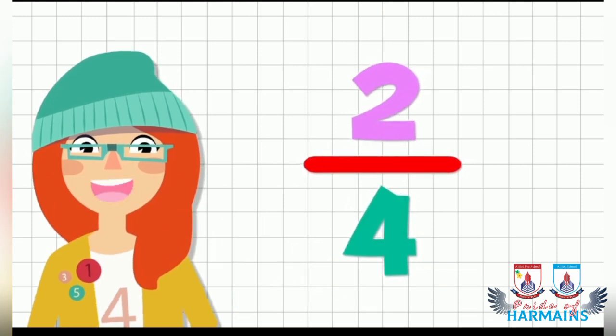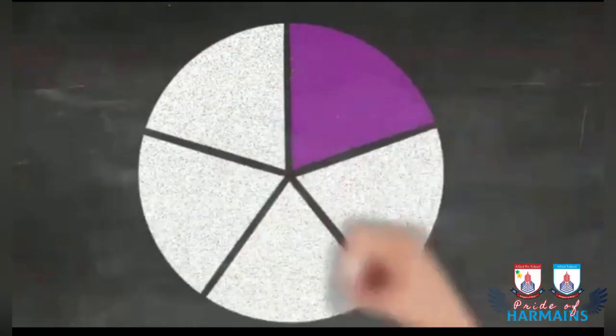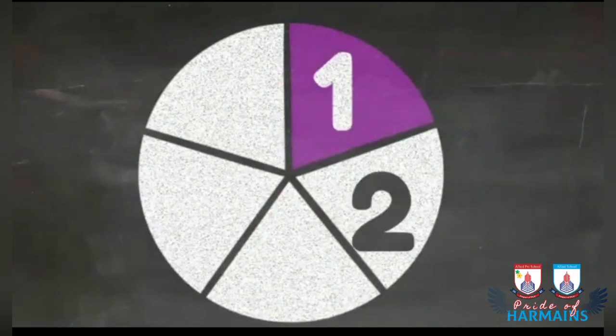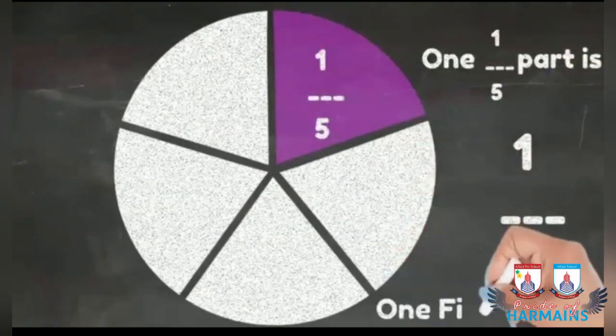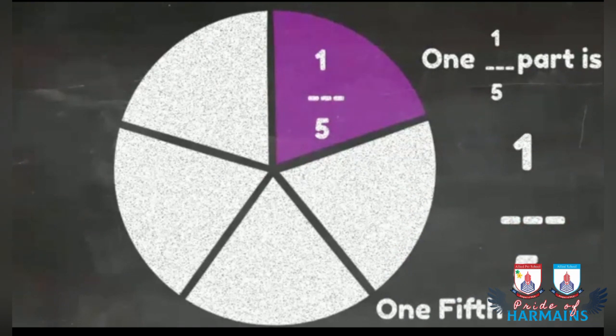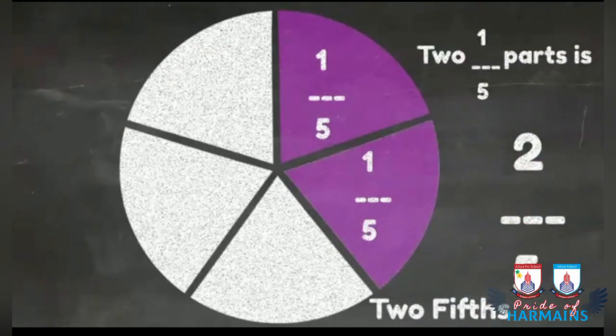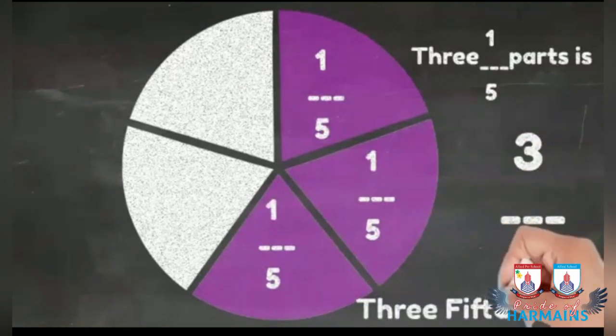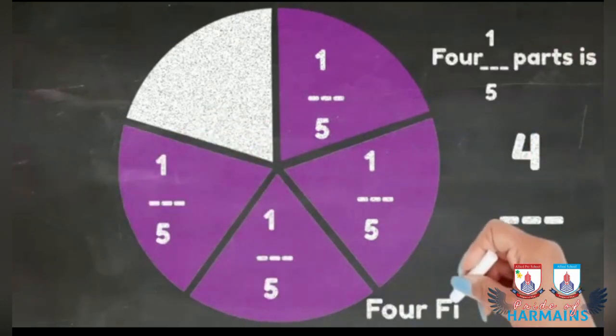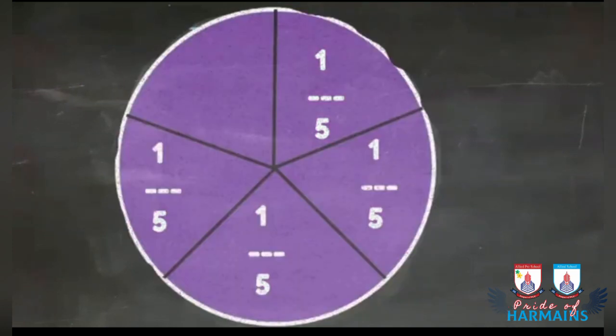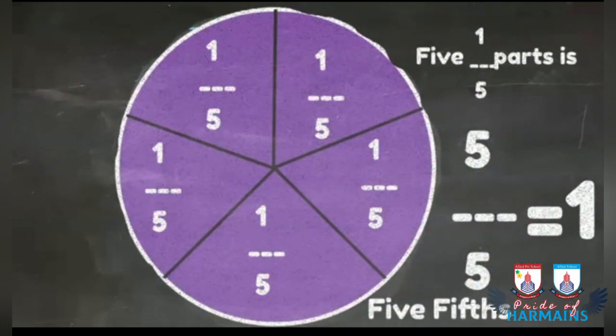Agar hum iske fourth part ko bhi color karte hain, to humare ye fraction ban jayegi four by fifth. Agar hum iske last part ko bhi color karte hain, to yeh ban jayegi five by fifth which is equal to one. Matlab hua complete whole.